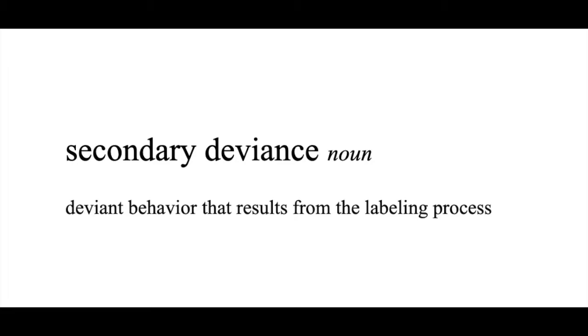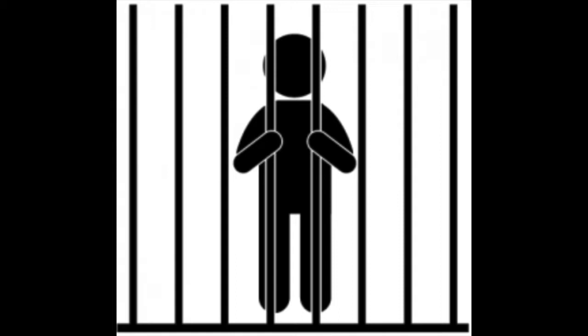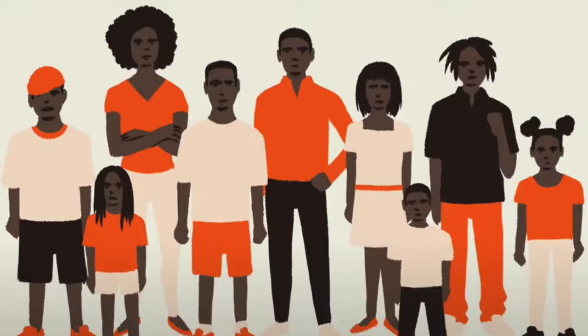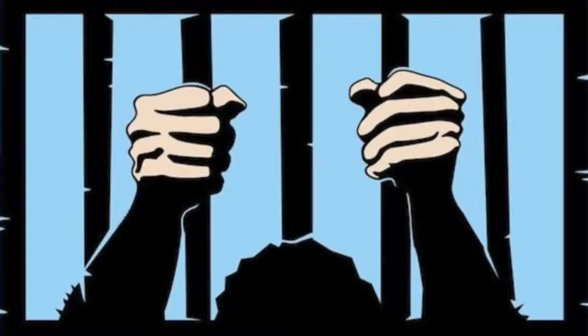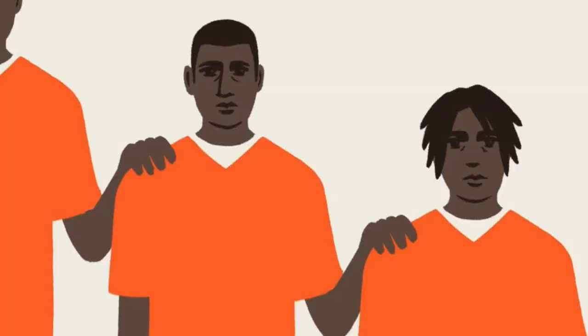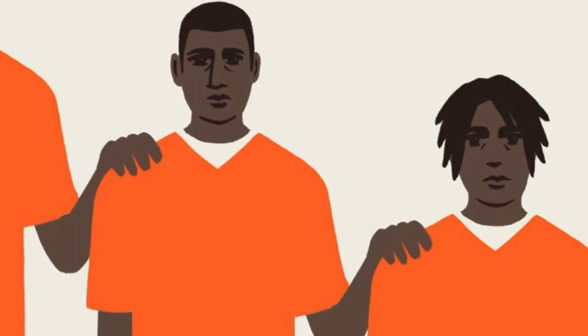What is the importance of these two? Let's use the Black prison population as an example. Black people are incarcerated at a higher rate than any other group. An immense consequence of this representation in the prison population is that it causes many cases of secondary deviants. With the large Black population incarcerated and labeled as deviant by society, the younger generation of Black children have the chance of showing deviant behaviors because of this labeling process.